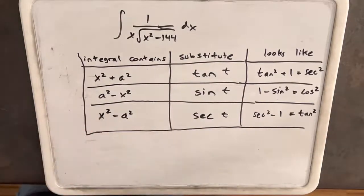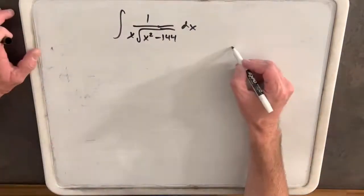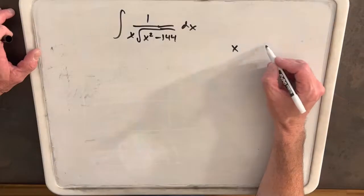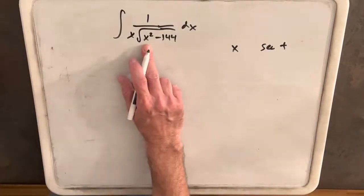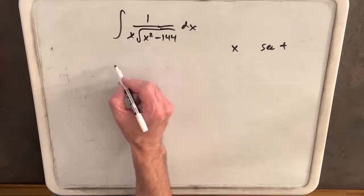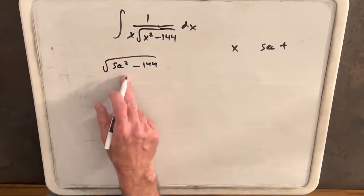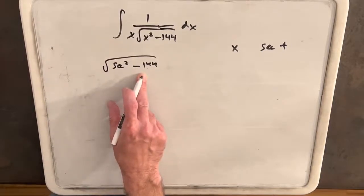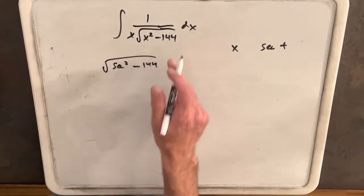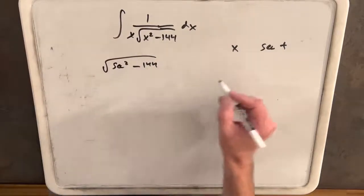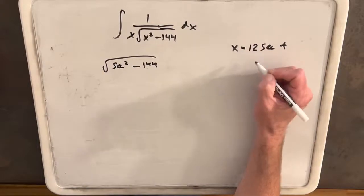Now using this last line, we'll do this problem. I want to substitute x with secant. I don't want just secant because if I end up with secant squared minus 144, I can't use my identity. I want secant squared minus 1. I'll set x equal to 12 secant t.